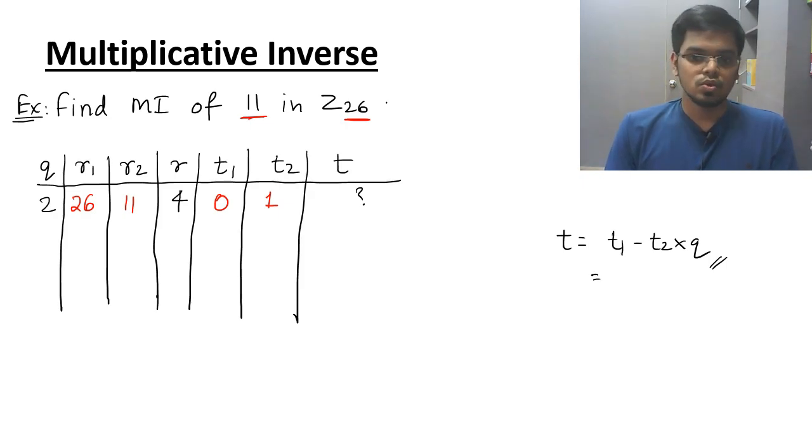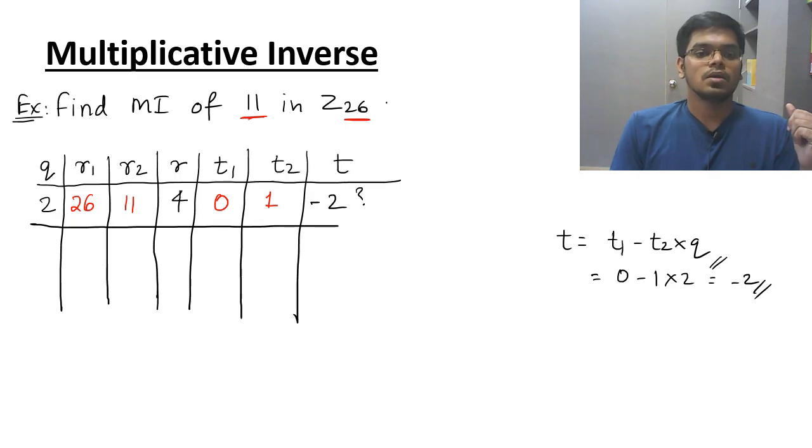So do the substitution. 0 minus 1 into 2 answer is minus 2. So minus 2 is written here. This is my row 1 element. All done.